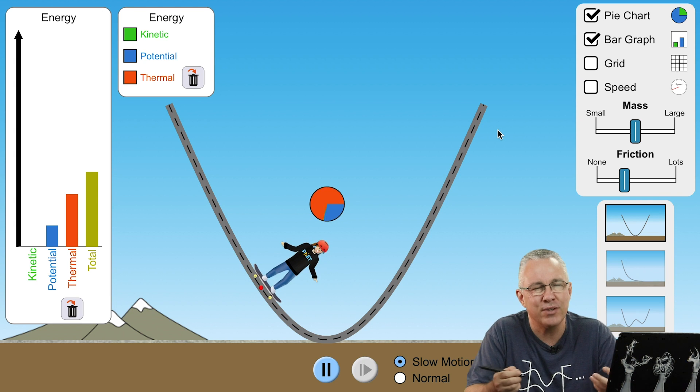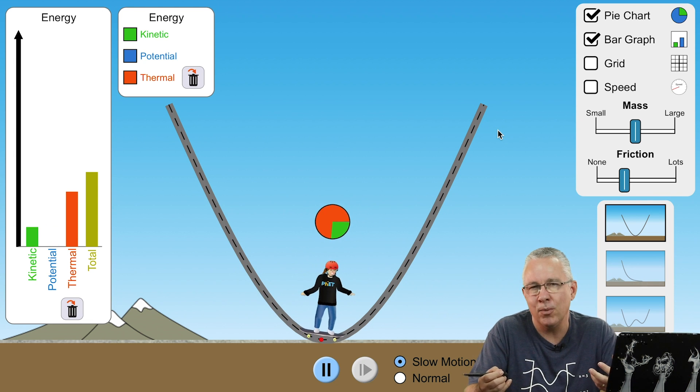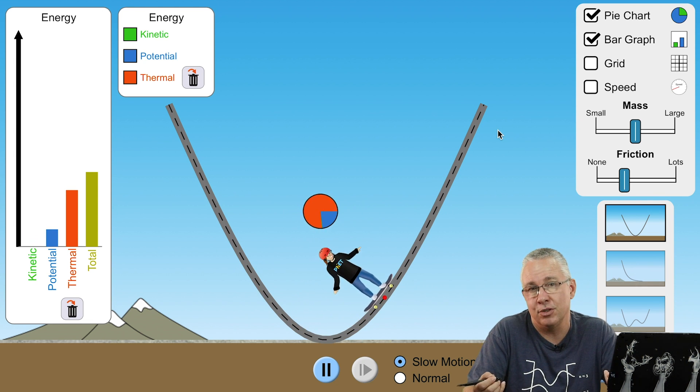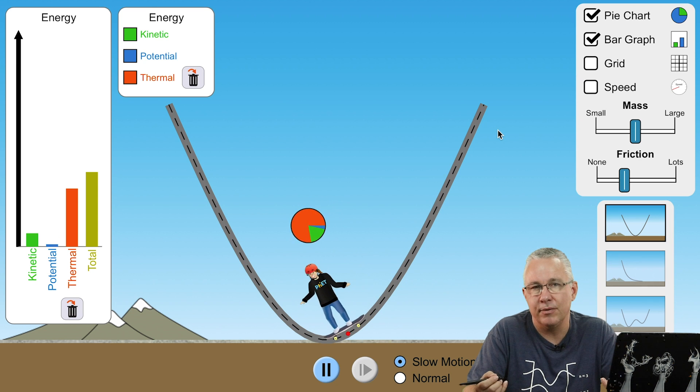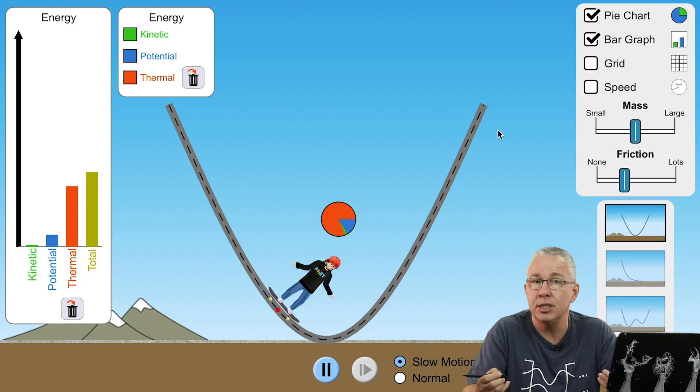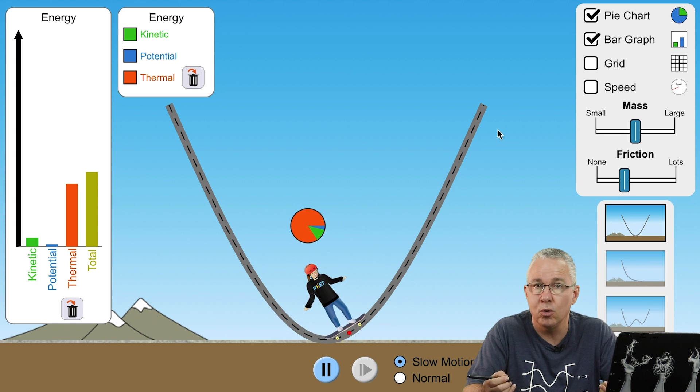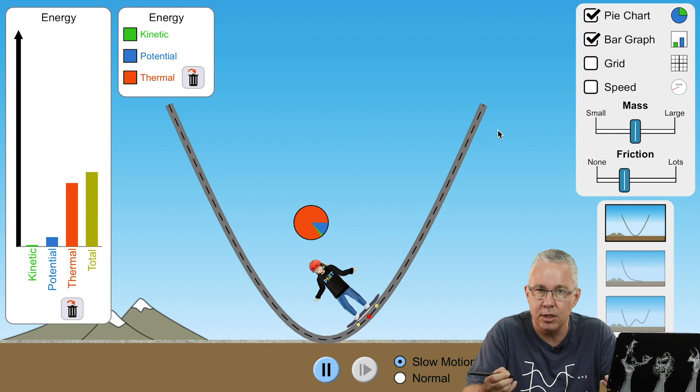Now we haven't lost it. It's just been transformed into a form that we can't utilize, and so as a result we have our decrease in potential and kinetic. But the total energy is still the same. The law of conservation of energy is still true.